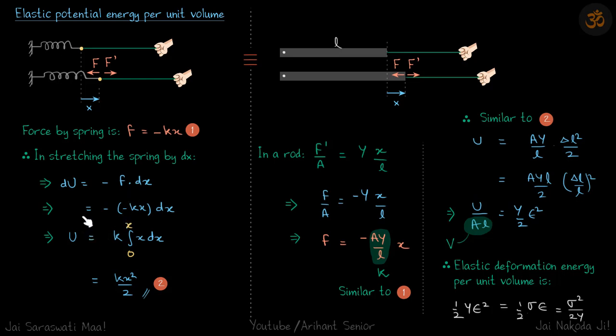What we get is U is equal to kx squared by 2. You must already know this derivation, it's a very basic derivation. We are just doing it again because our situation of the spring is analogous to the situation where we pull the rod and stretch it.